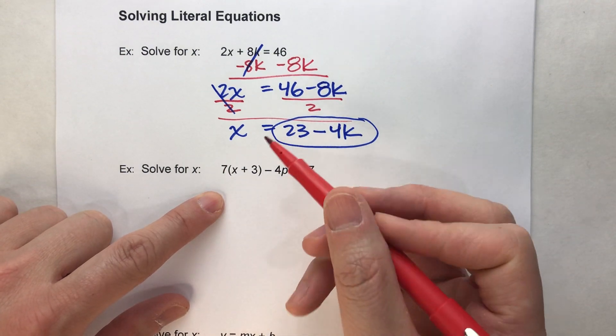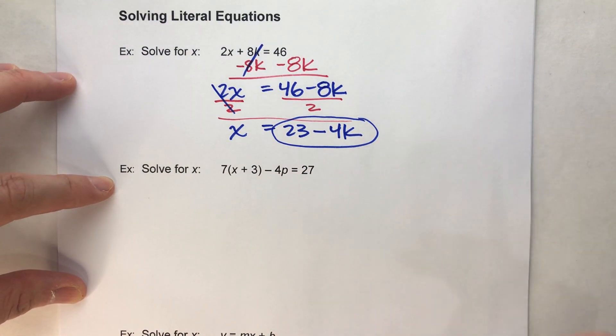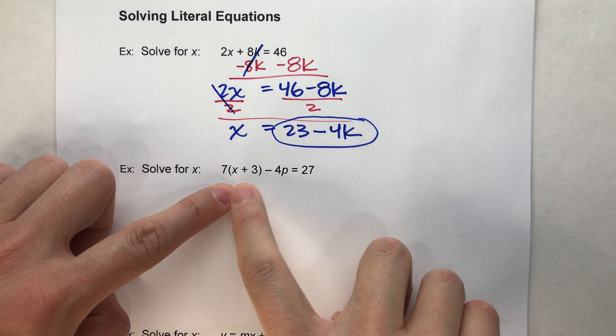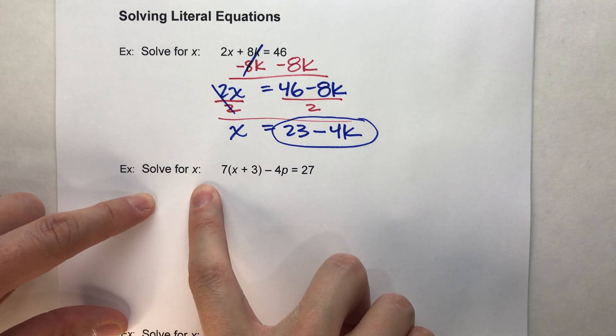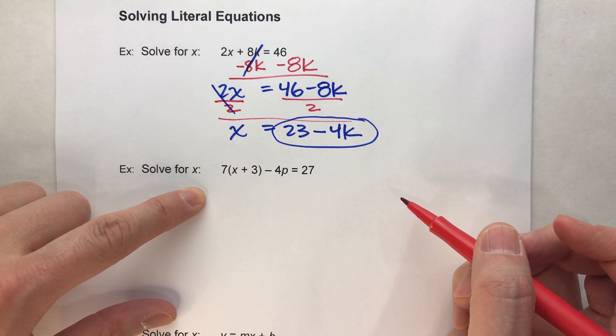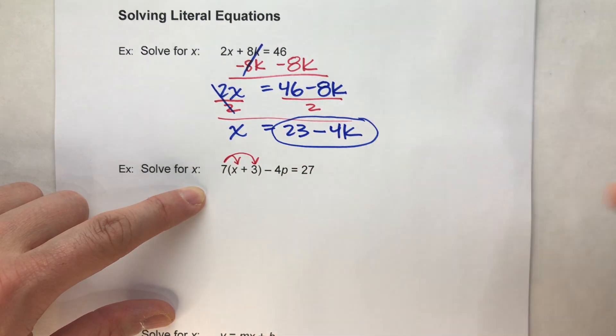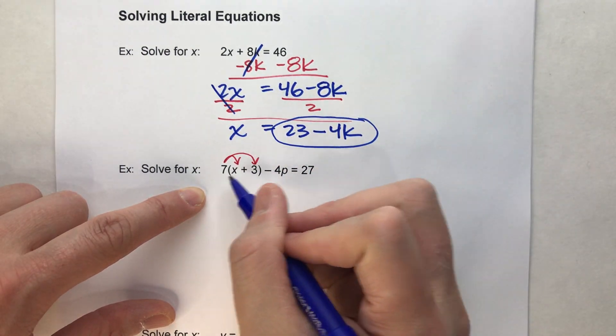Solve for x: 7 times parentheses x plus 3, minus 4p equals 27. Again, we've got multiple variables in here, so we're not going to get one single value for x. Now, there's lots of ways to solve this. I'm just going to start by doing the distributive property. I've got a lot going on in here, I just want to simplify this thing down.